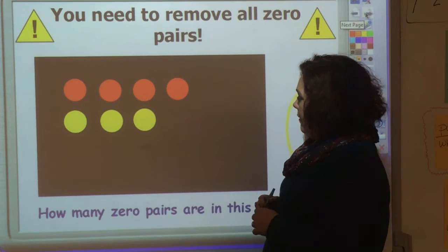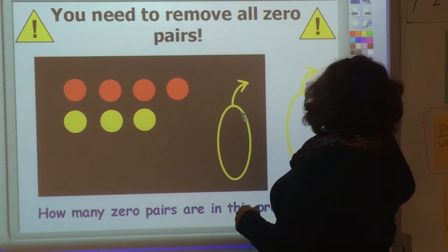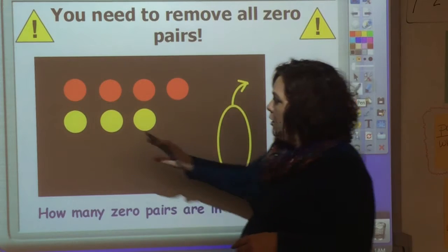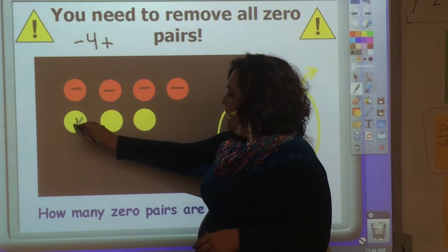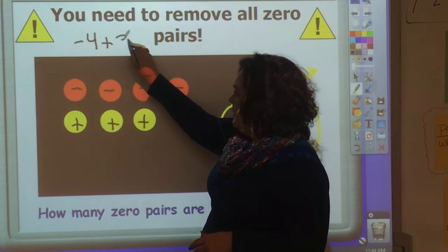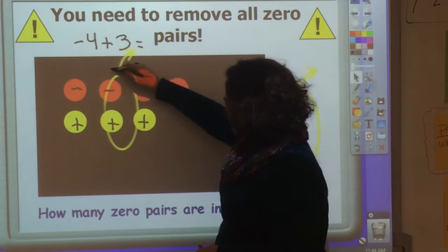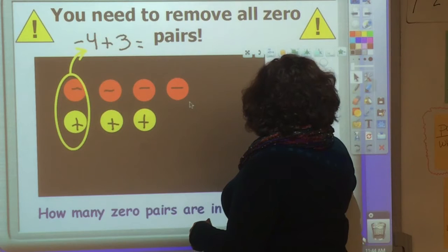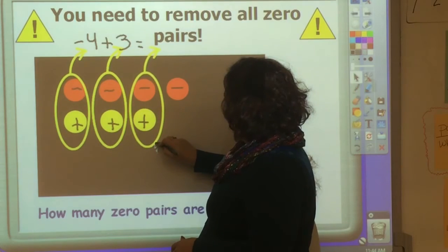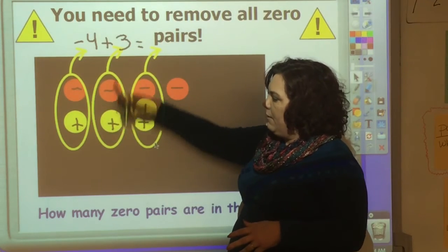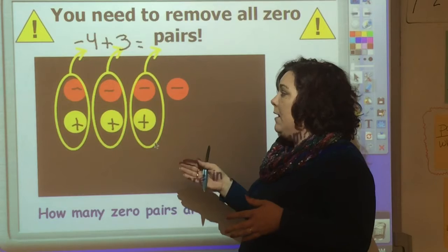You need to remove all zero pairs. So we're going to take a little lasso. Let's look at this problem. Let's see what is being modeled. So I've got one, two, three, four negatives. So negative four. And I'm adding or combining three positives, plus three. So let's use the zero pairs. These zero up and go away. These zero up and go away. These zero up and go away. And so I'm left with negative one. So you have to zero pair out.